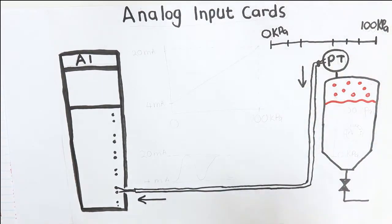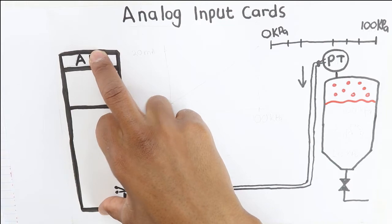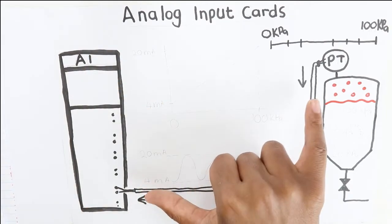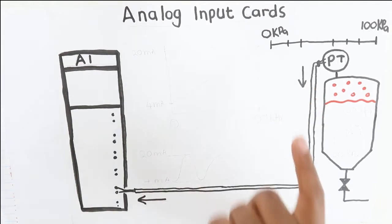An analog input card will read these values coming from the transmitter and pass these values to the CPU. However, since the pressure transmitter and the analog input card are electrical devices, they will communicate with each other electronically.